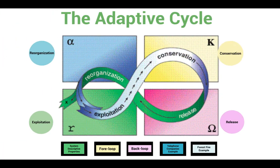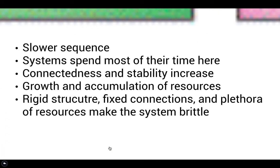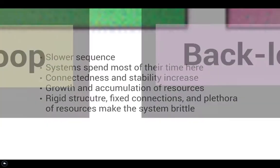Together, the exploitation and conservation phases are known as the front loop in the adaptive cycle. This sequence is slower compared to the back loop and systems spend most of their time here. Connections and overall system stability increase during the front loop, as does growth and resource accumulation. However, all of this contributes to a rigidity of the system that makes it brittle and poised for breakdown.